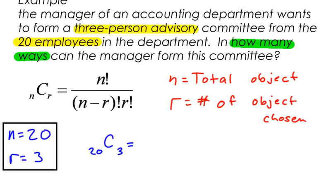n is 20, so this is going to be 20 factorial, divided by n minus r factorial. So this is 20 minus 3 factorial times r factorial. So times 3 factorial. So there's the math.